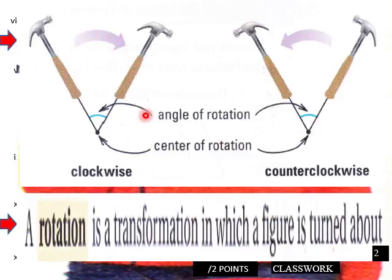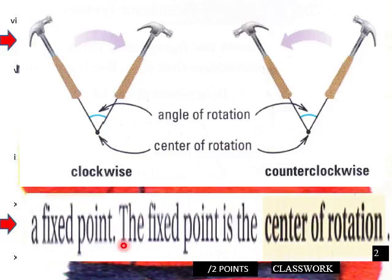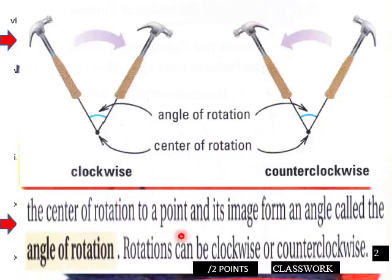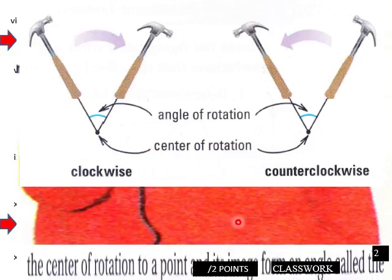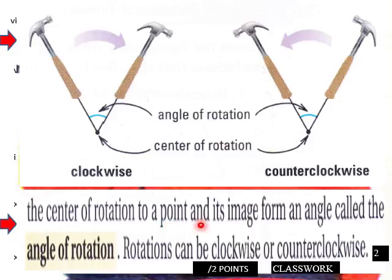Clockwise rotation means the figure moves in the same direction as a clock. Counterclockwise is the opposite direction. The fixed point is the center of rotation. The center of rotation to a point and its image form an angle called the angle of rotation. Rotations can be clockwise or counterclockwise.